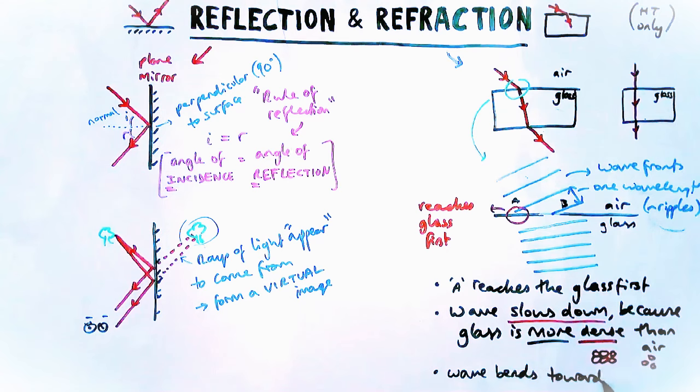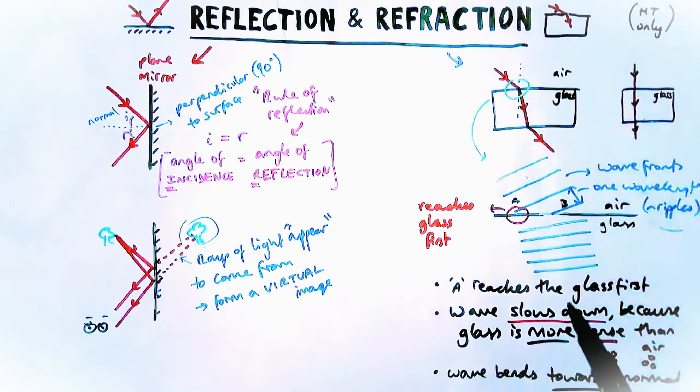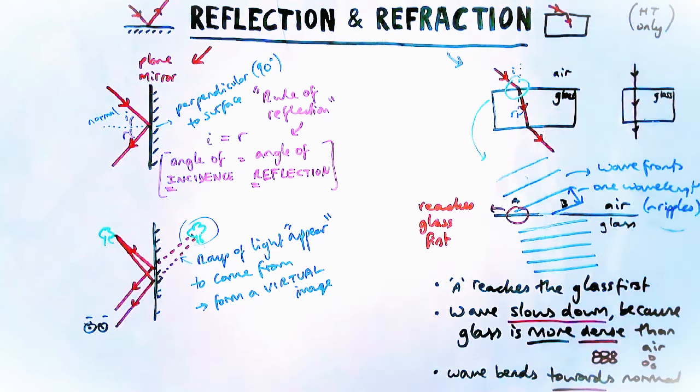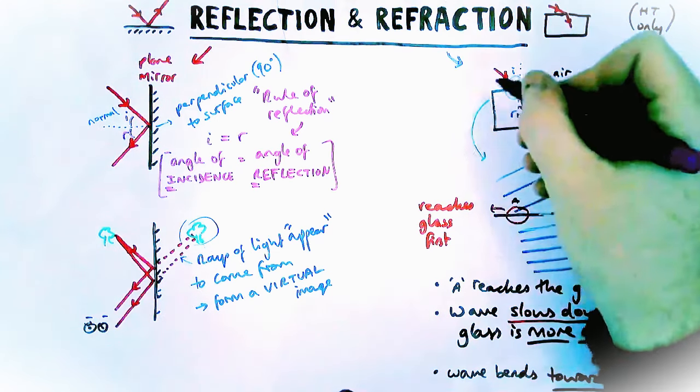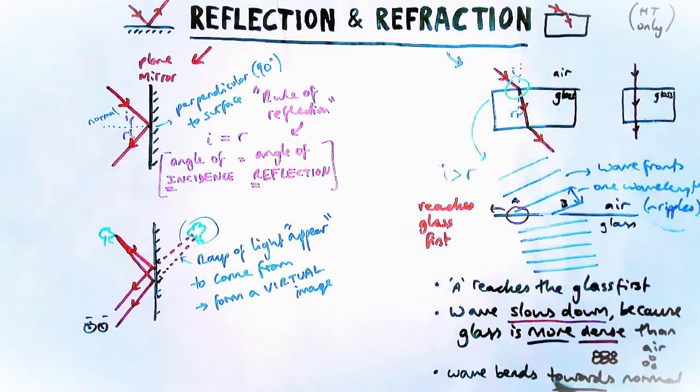So as a result the wave will bend towards the normal. Now we didn't draw the normal in on our diagram earlier so let's just draw it in now. So normal is just a dotted line, it's an imaginary line we draw in 90 degrees to the surface. We can see that actually the angle it goes in at is slightly bigger than the angle it comes out at compared to the normal. So we say it bends towards the normal in this case. When it leaves the glass the opposite happens.